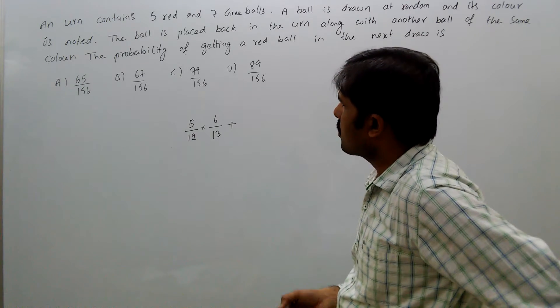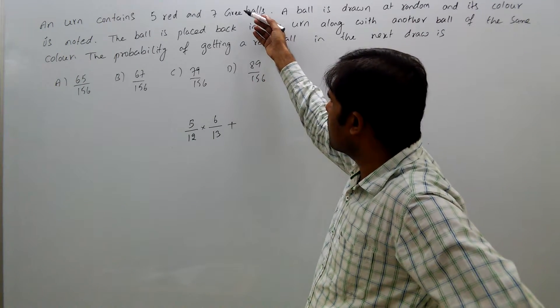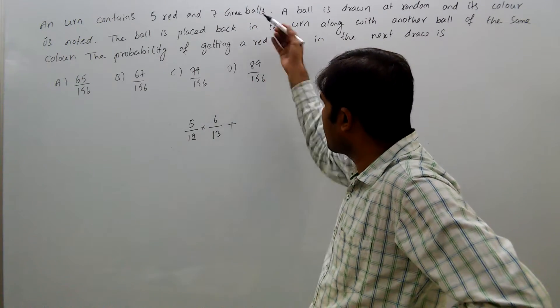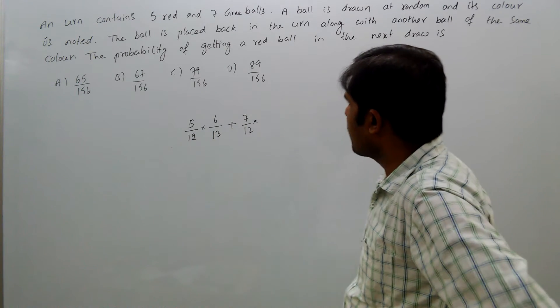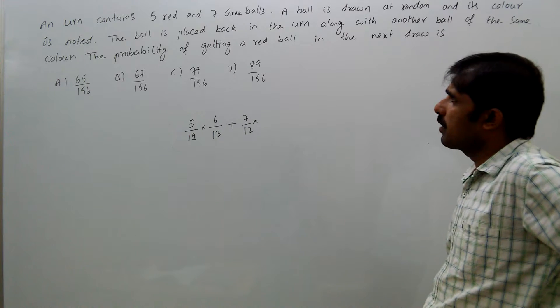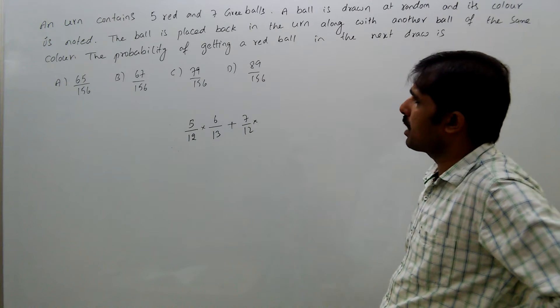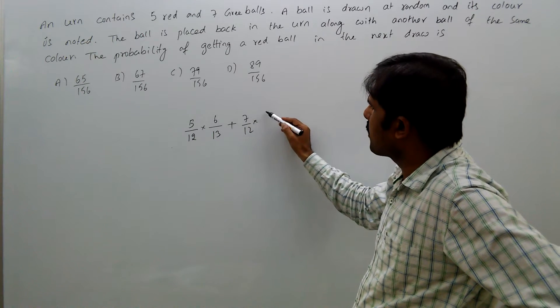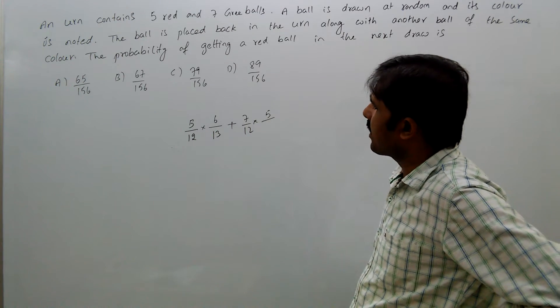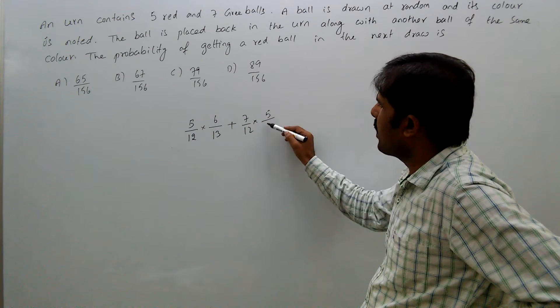Plus, suppose the first ball drawn is green. The probability of that is 7 by 12. Then the added ball will be green, so green balls will be 8 and red balls will be 5, total 13 balls. In the second draw, getting a red ball is 5 by 13.